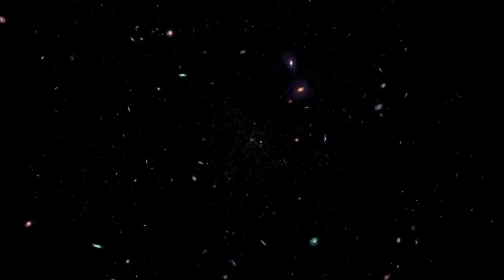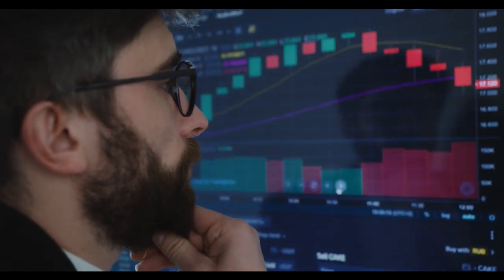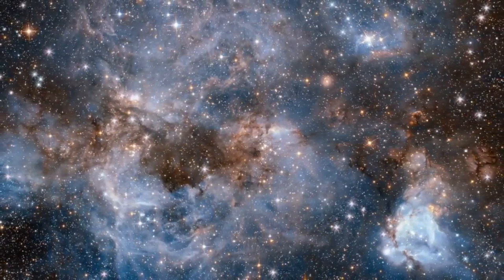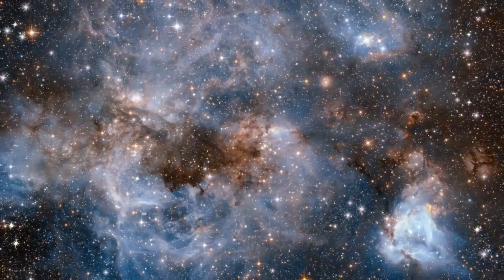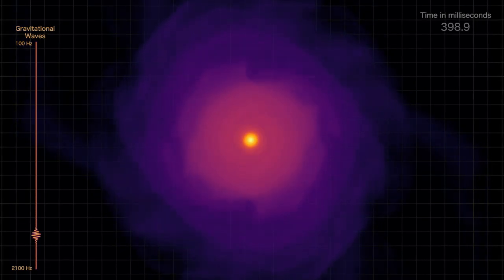When analyzing the data generated by James Webb, there are two competing possibilities for these objects. One is that they are galaxies containing millions of stars common to Population 3. And the other is that they are dark stars.